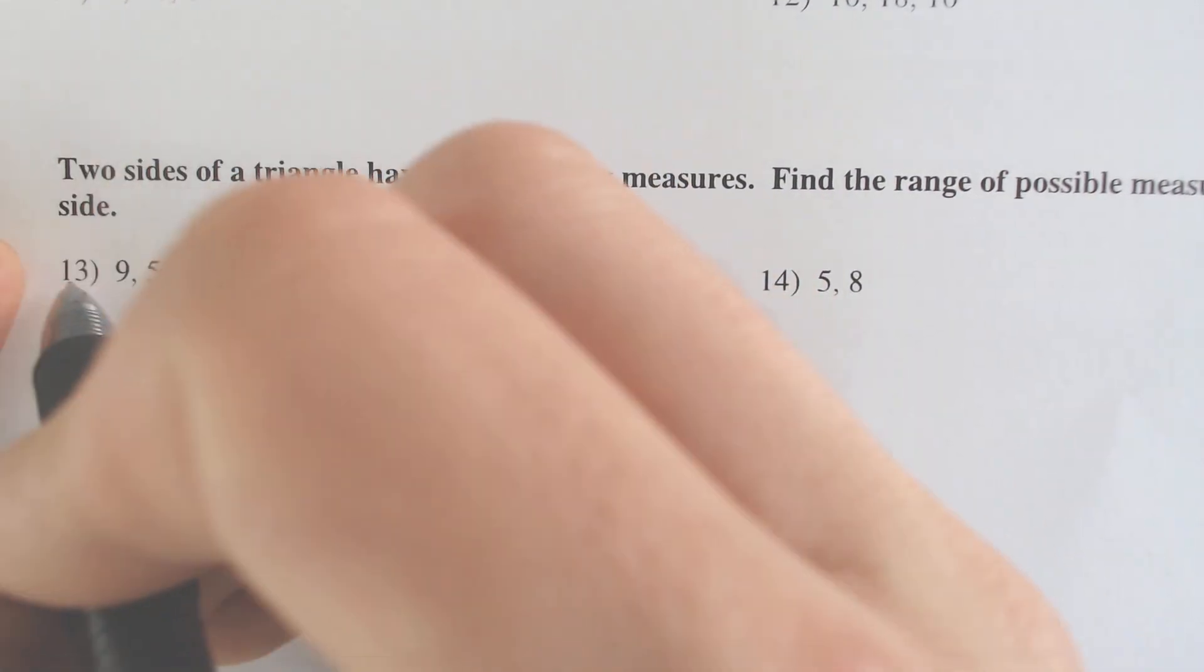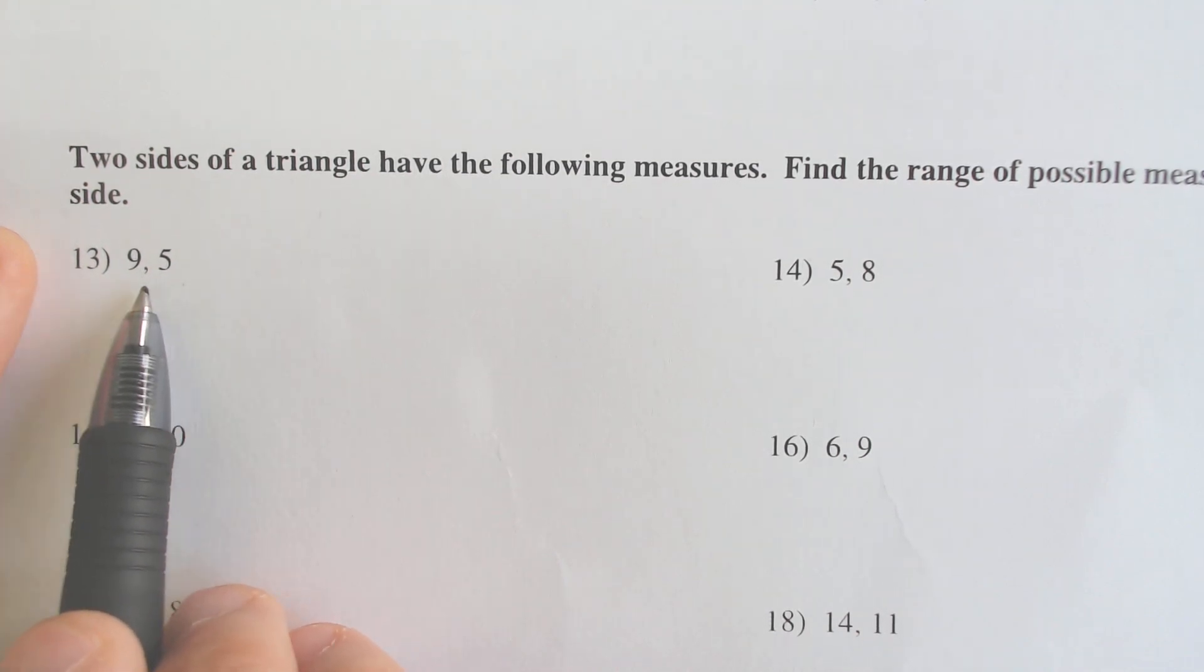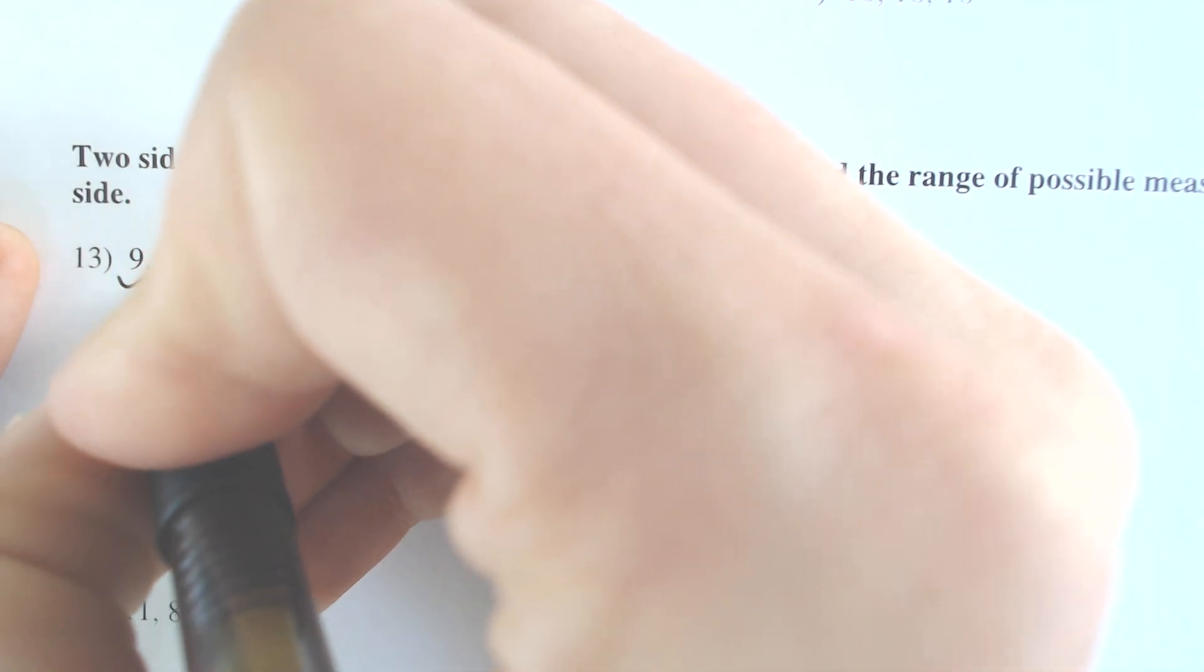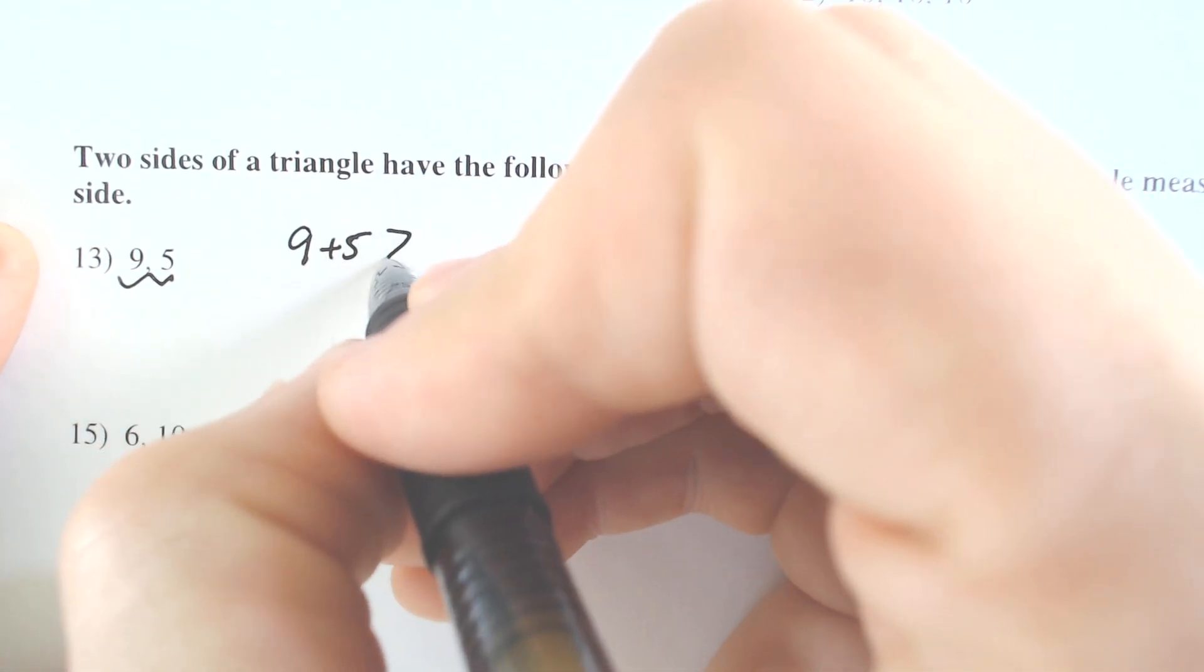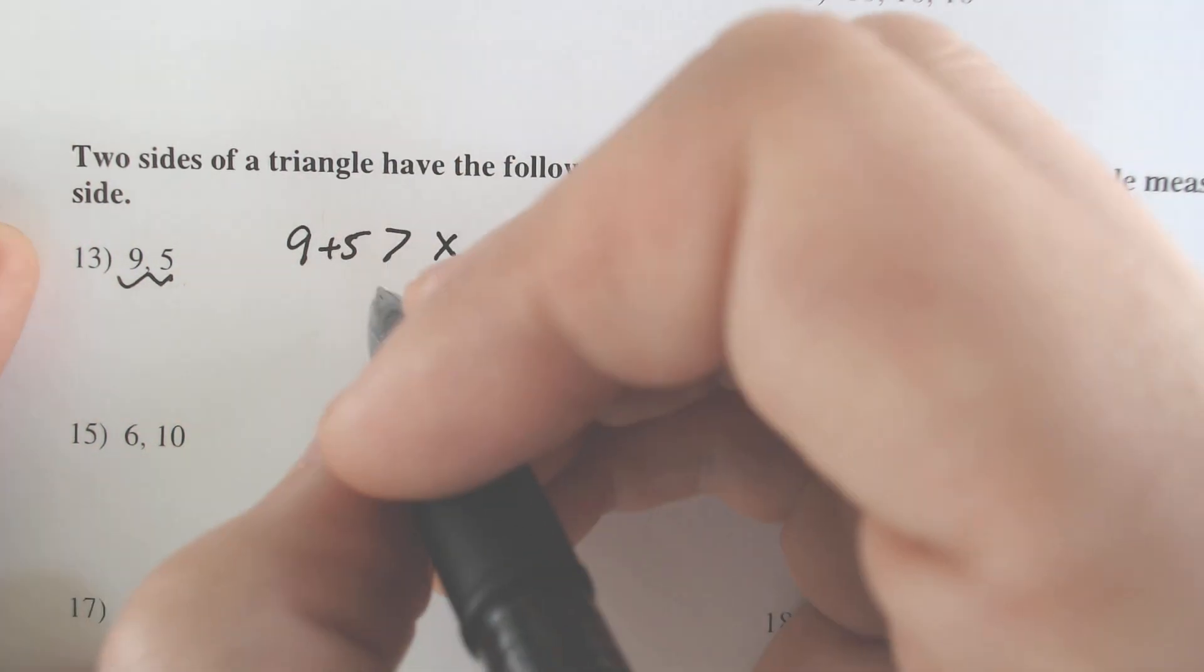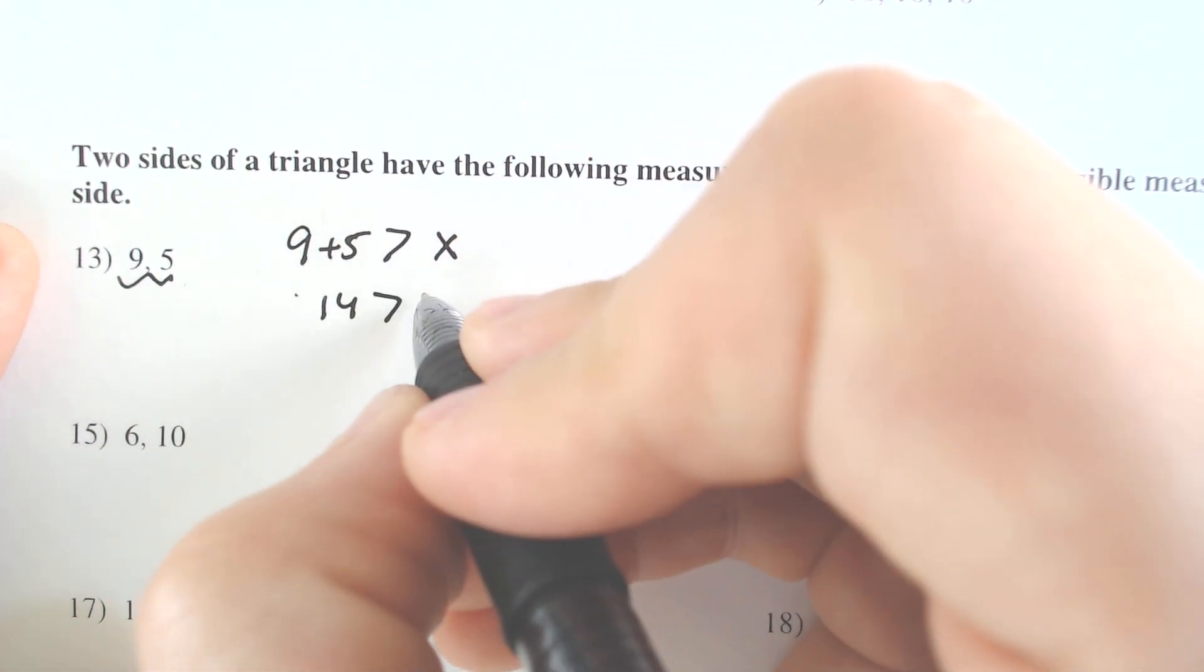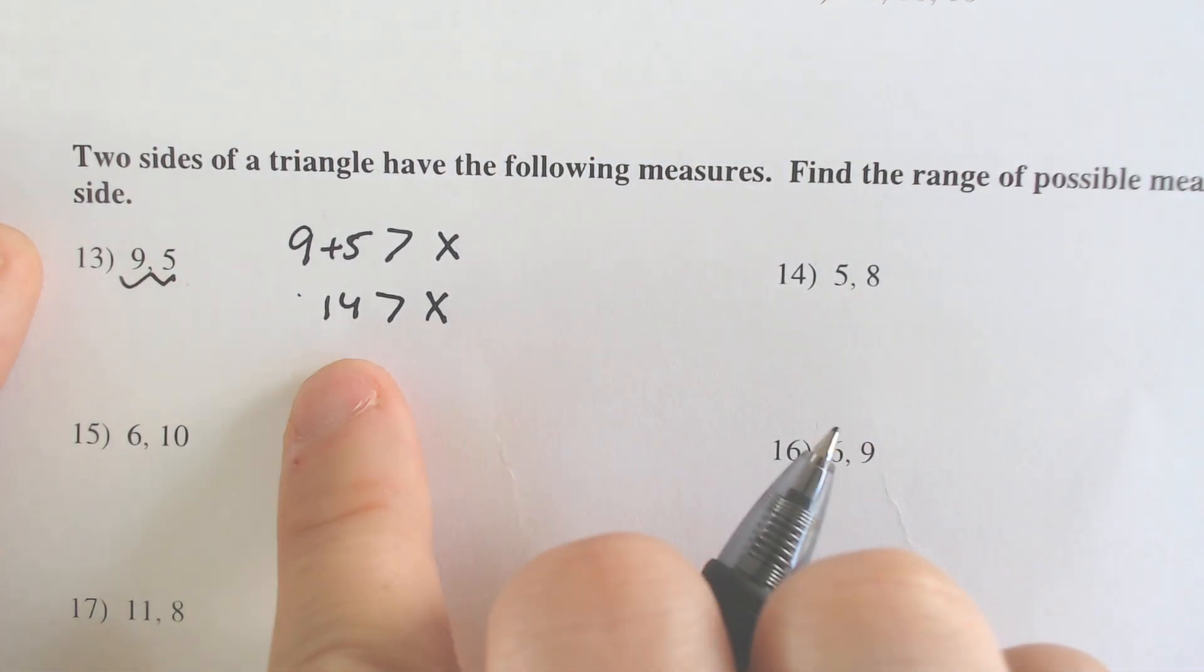And the issue is that we don't know if the 9 and the 5, these two sides are the shorter two sides, or if one of those is the longer side, which means that 9 would be the longer side. So you have to do it twice. So if these were the shorter side, that would mean that 9 plus 5 would have to be greater than that third side, which we'll call X. Which means that 9 plus 5 is 14. 14 is not allowed to be X. X has to be smaller than the 14.